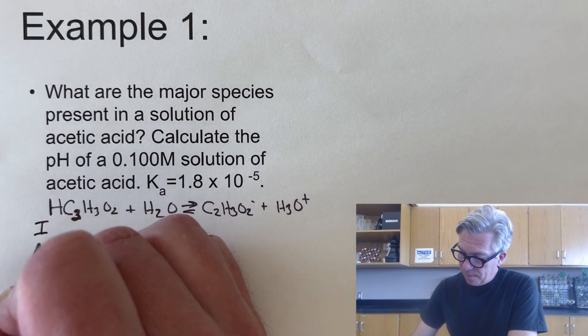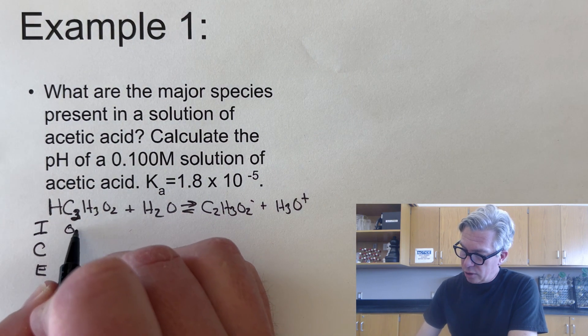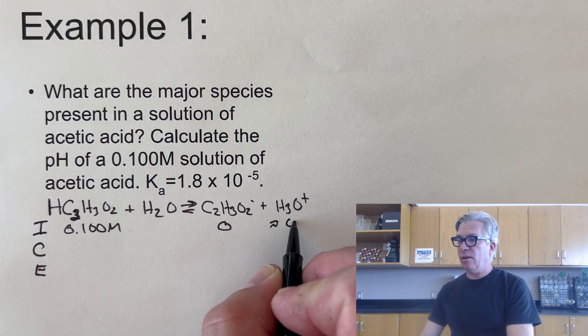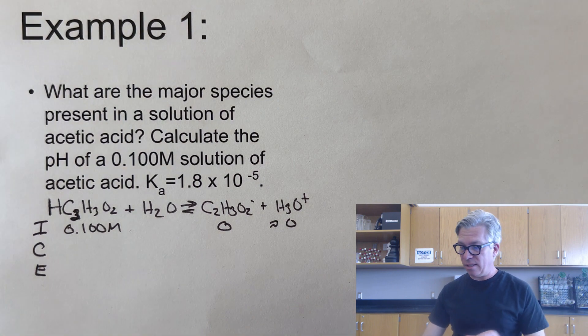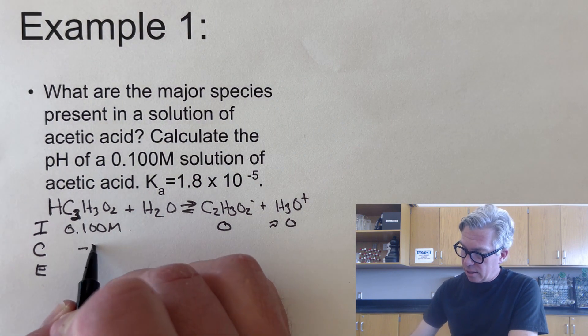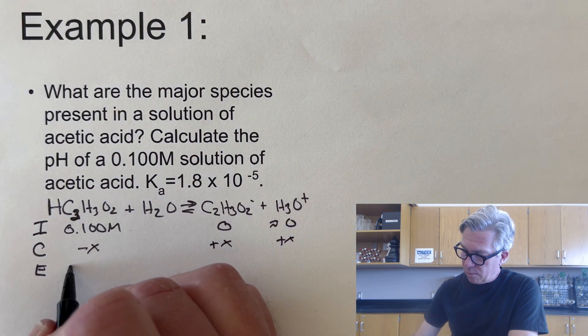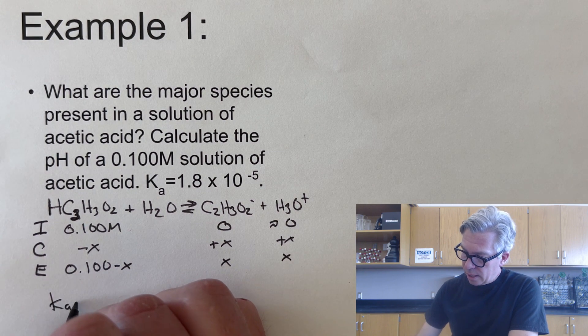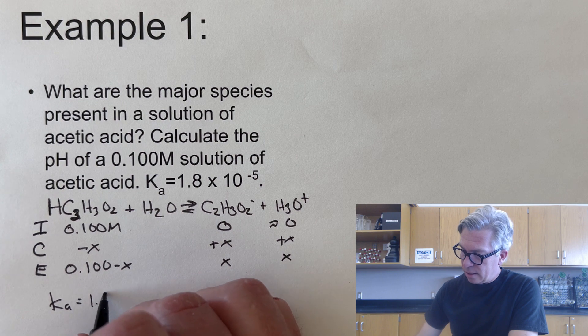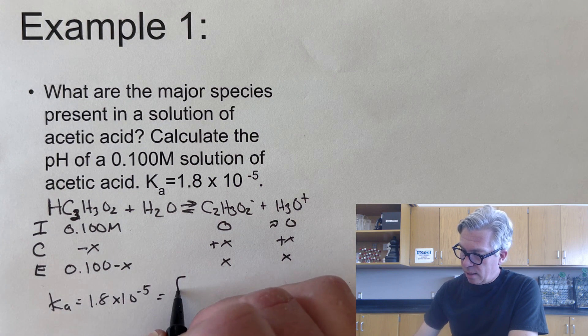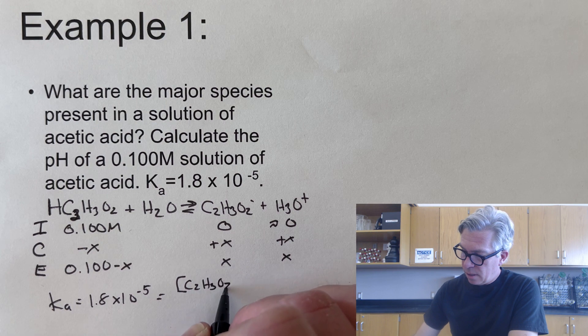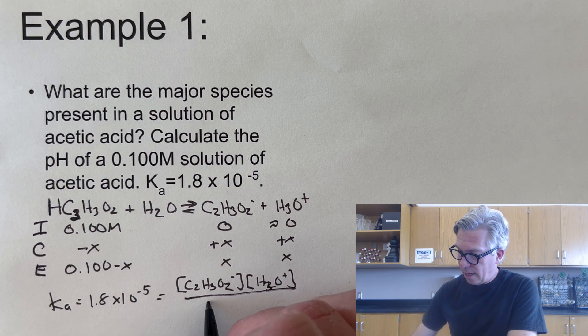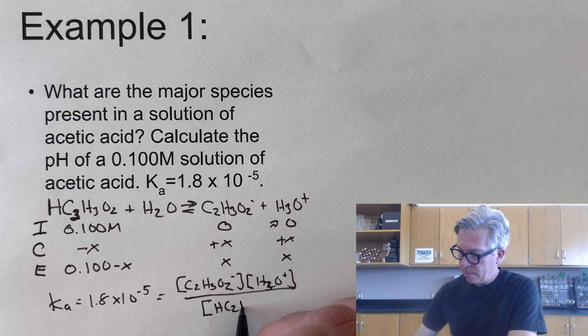Let's go ahead and do an ice table. And we have a 0.1 molar solution to begin, zero of that and approximately zero of that, although there is some hydronium in pure water. It's going to be insignificant so I'll treat it like zero. Minus X plus X plus X. And I'm going to end up with 0.10 minus X, X and X. The Ka value for that is 1.8 times 10 to the minus fifth.